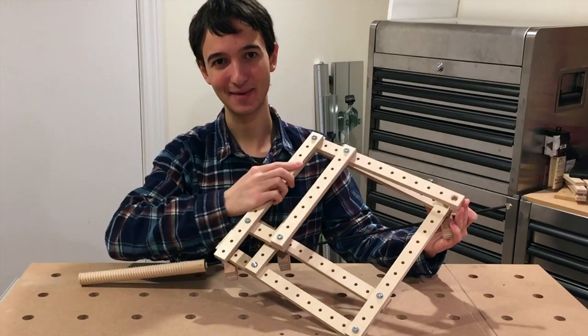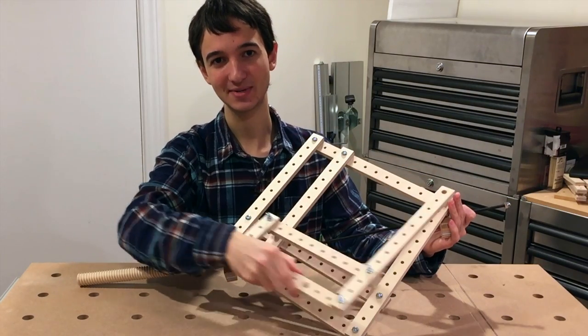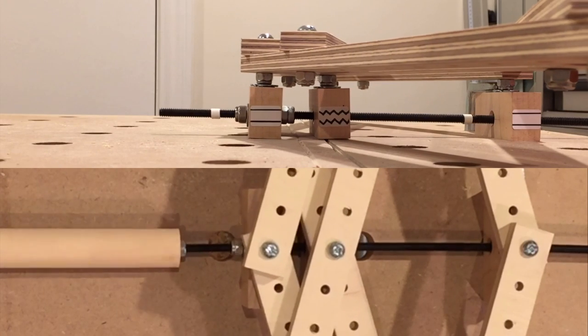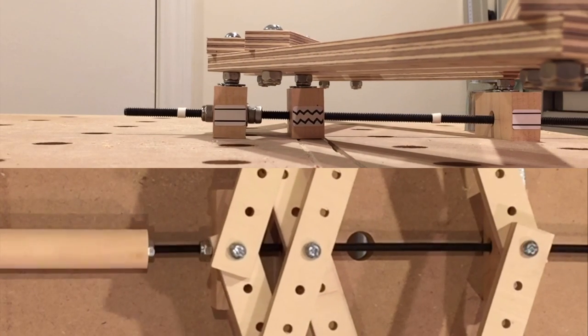The jig is basically two pantographs back to back, two instead of one for symmetry and better stability. The size of the pantograph is precisely controlled with a metal threaded rod.